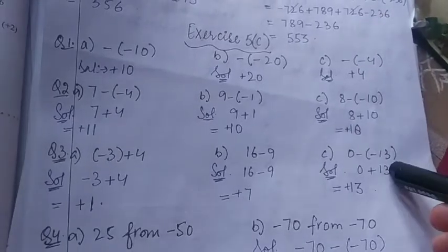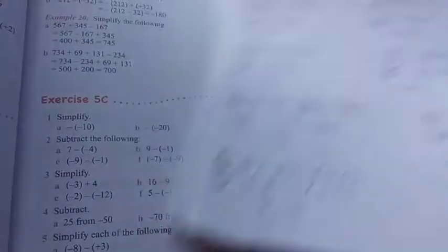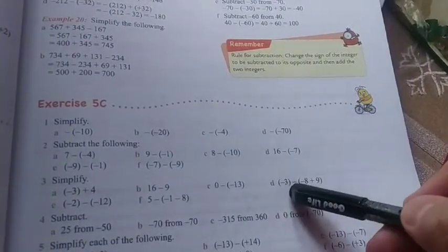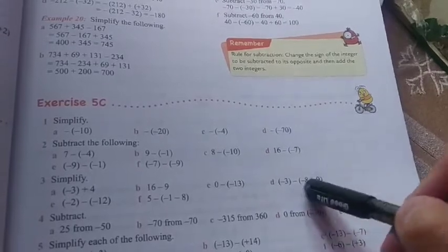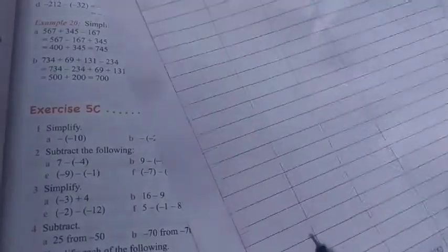It is 0 minus minus 13. It will be 0 minus minus plus. 0 plus 13. That will be 13. Here it will be minus 3. Minus. It will be 1. Right. Because minus 8 plus 19. It will be 1. Just look at it.